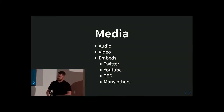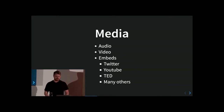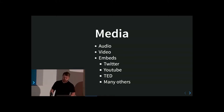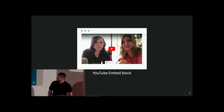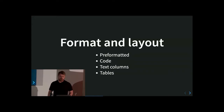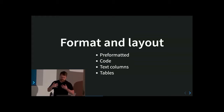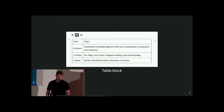Next we have media blocks. Media blocks offer audio, video, embeds — there are so many embeds. I believe there are 20 different sites that are explicitly supported, and then there's also a generic embed block which allows you to specify external resources from any site. Here's an example of the YouTube embed block. Then we have formatting and layout — things like pre-formatted text as a block, code as a block, text columns for multiple columns of text, and tables. Here's an example of the table block in the Gutenberg editor.